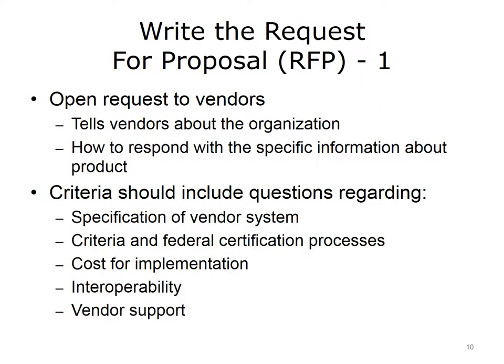Once the requirement specifications have been determined, the organization can write an RFP. This document is an open request to vendors explaining what they need to know about the organization and how to respond with information about their product. The RFP gives vendors an opportunity to provide specific information tailored to the needs of the organization and to adapt their products to the organization's unique requirements. For example, some organizations may already have basic electronic functions such as billing, coding, or scheduling at the time of EHR purchase. Other organizations may want to incorporate paper documents into electronic systems, usually by scanning them into the EHR.